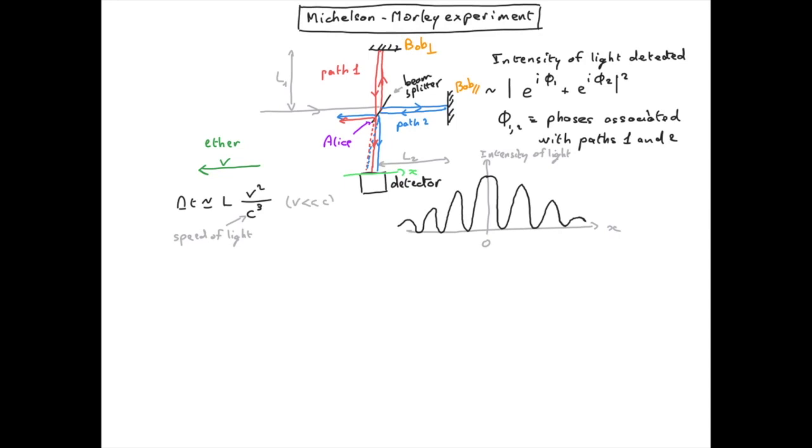And we know that the phase associated with the path is proportional to the time of propagation. So if we have a difference of time between paths 1 and paths 2, therefore we will have a difference of phase between these two paths. This means that instead of constructive interference at x equals 0, the intensity of light will be smaller than that.